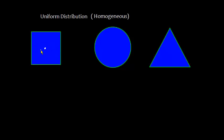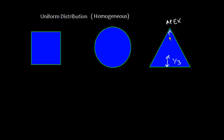Similarly, for a few shapes: for a square, the geometrical center is at the intersection of the two diagonals — that is where the center of mass or center of gravity will be. For a circle, it is at the center. For a triangle, it is one-third from the base and two-thirds from the apex.